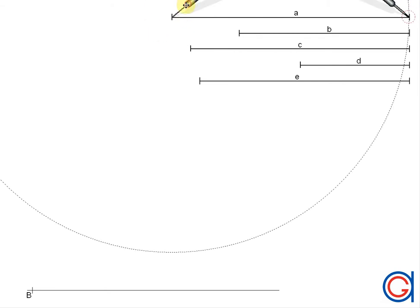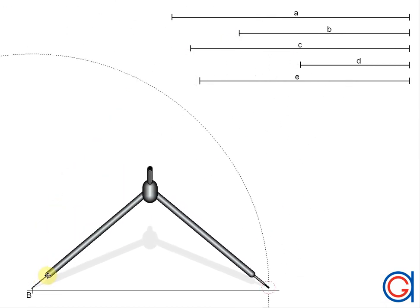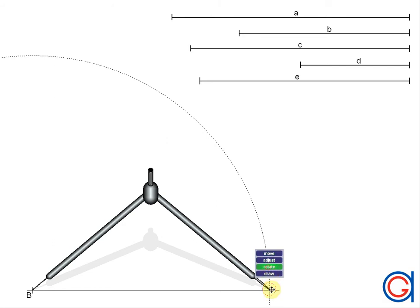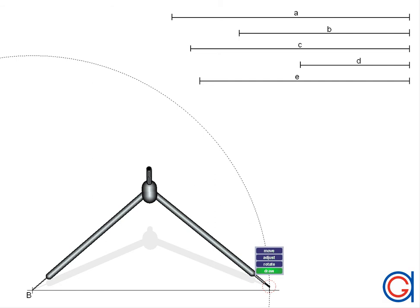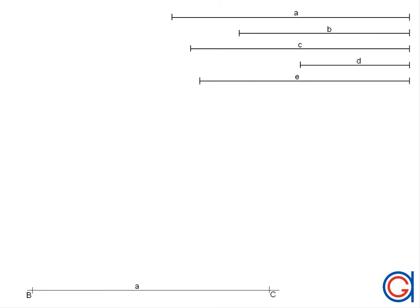Now the next step, setting the compass to the length of side A. We are going to transport this length to our horizontal line by setting our compass on point B and scribing an arc which will be our new vertex C.